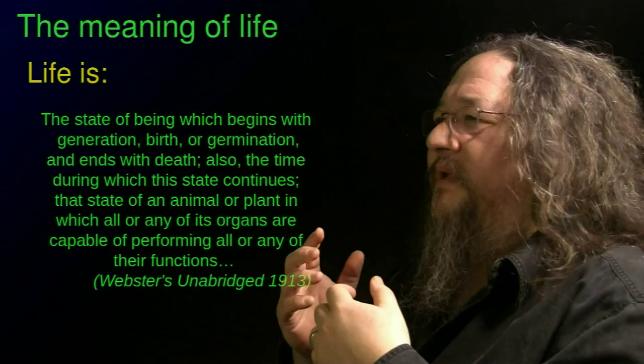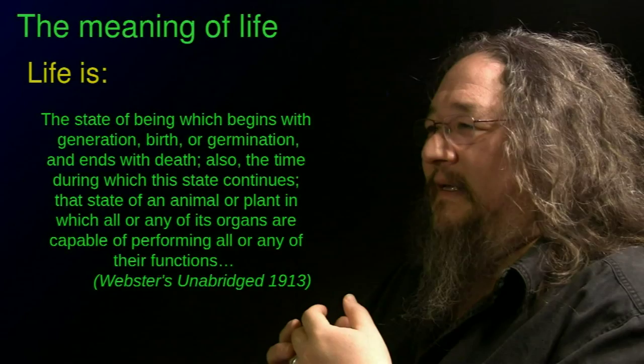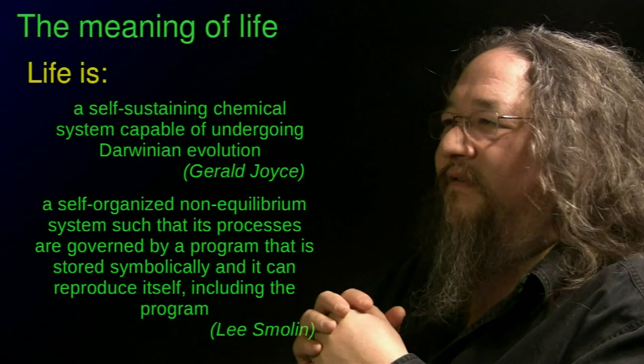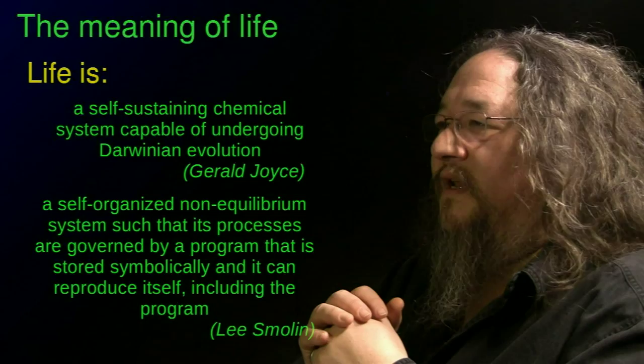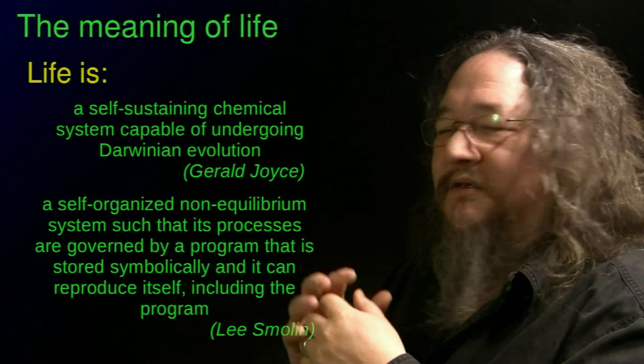Here's a dictionary definition: the state of being which begins with generation, birth, or germination, ends with death — anything that happens in the middle. Many people have taken cracks at coming up with such a definition. Here are two: a self-sustaining chemical system capable of undergoing Darwinian evolution; and a self-organized non-equilibrium system such that its processes are governed by a program, stored symbolically, and can reproduce itself.